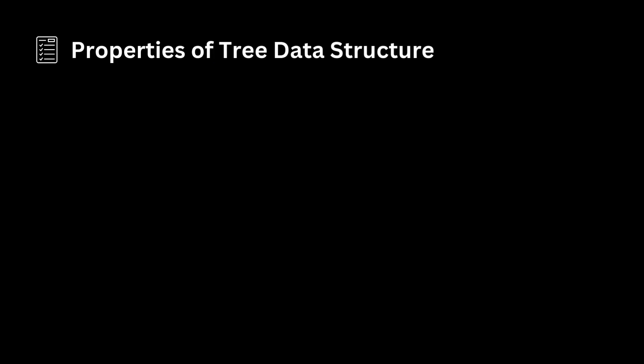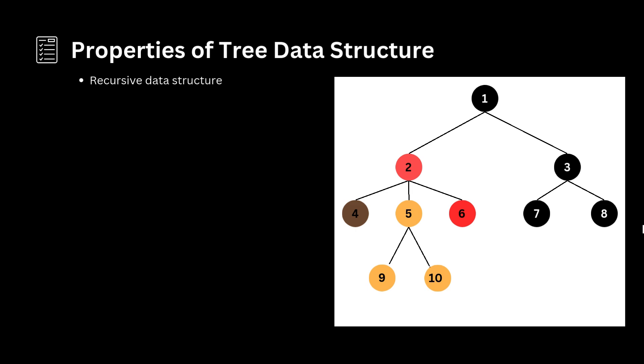Now let us see the properties of tree data structure. A tree is often referred to as a recursive data structure because it can be defined recursively. In a tree, the distinguished node is the root node which contains links to the roots of its subtrees. For example, in the figure, the left subtree is shown in yellow and the right subtree is shown in red.